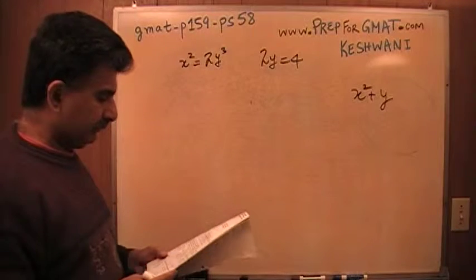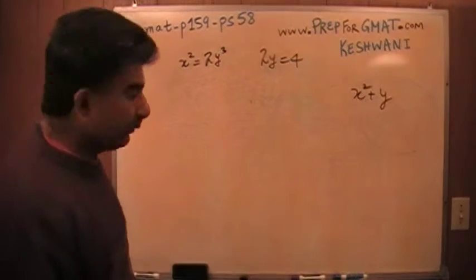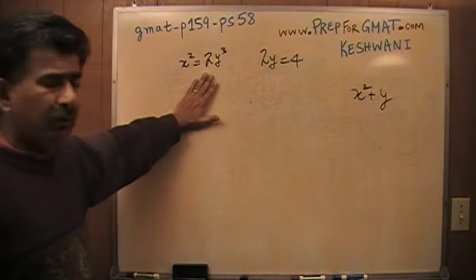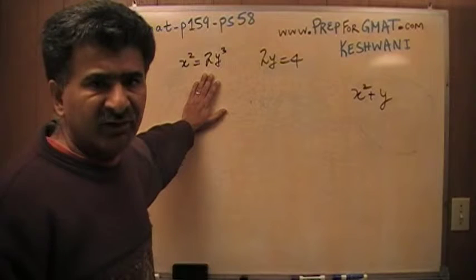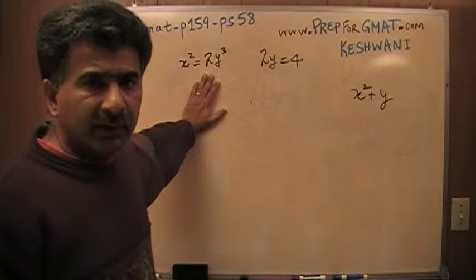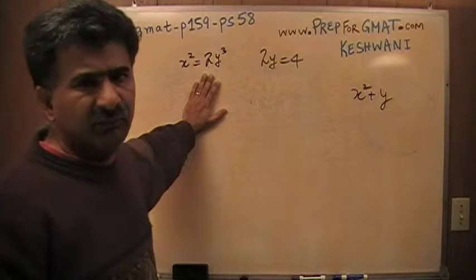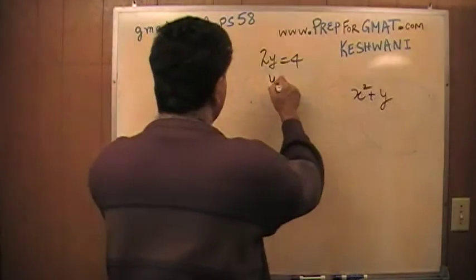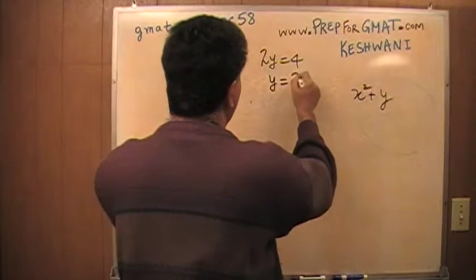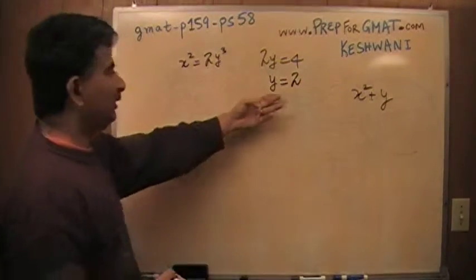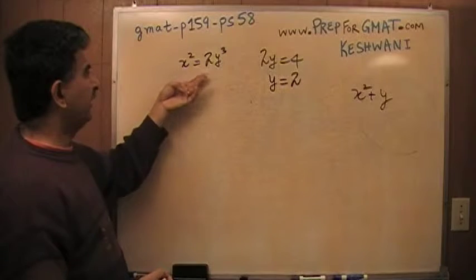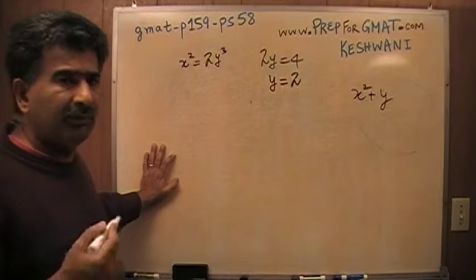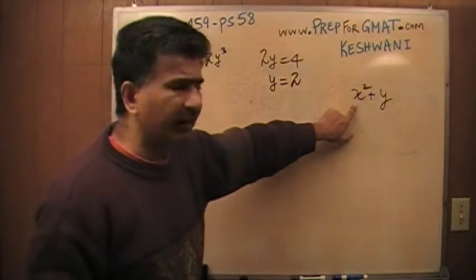Alright, sounds straightforward. You have two equations here. Which equation do I start with? Don't start with the first equation just because it's the first equation. Let's solve for y. If 2y equals 4, y would have to be 2. Now that I have the value of y, I'm going to put it in the first equation and find the value of x squared. I'm not going to waste my time trying to figure out the value of x because I don't need to know that. I only need to know the value of x squared.